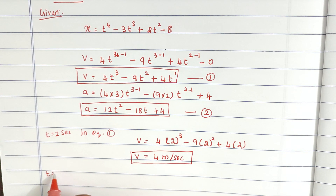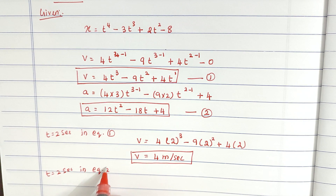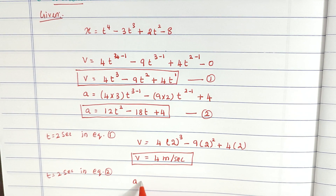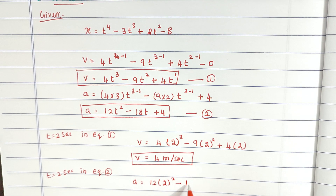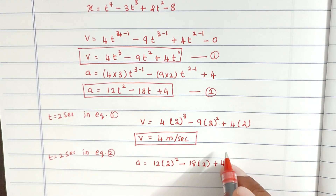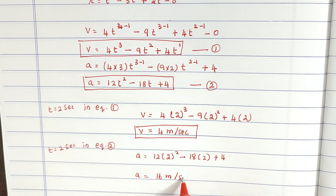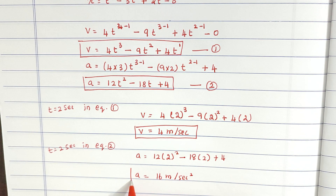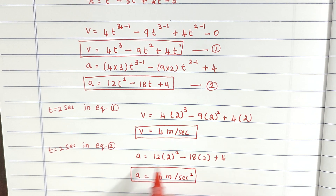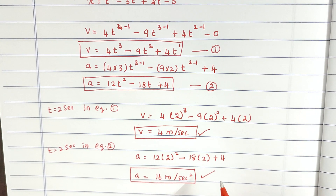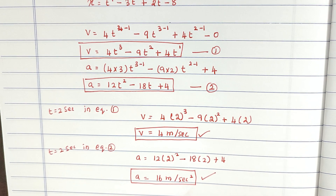Likewise, substituting t equal to 2 seconds in equation 2: a equal to 12 into 2 power 2 minus 18 into 2 plus 4. Solving this, we get the acceleration equal to 6 meters per second square. This is the velocity and this is the acceleration.